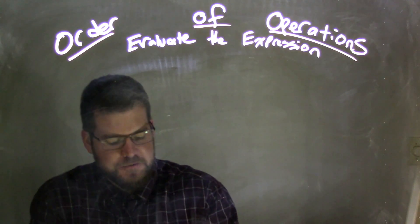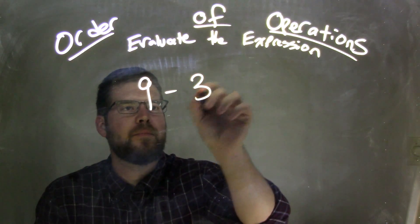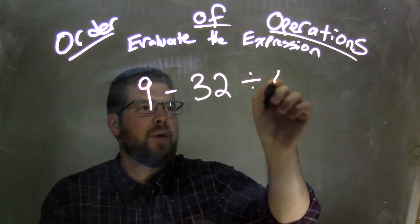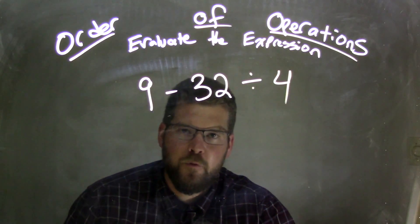So if I was given this expression, 9 minus 32 divided by 4.